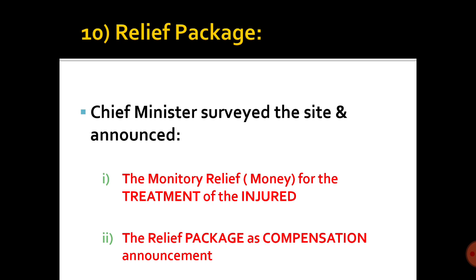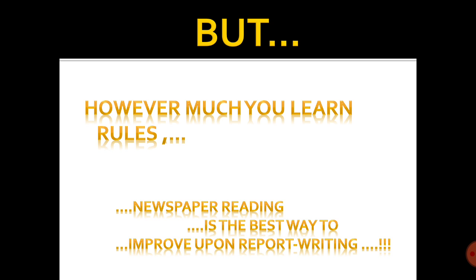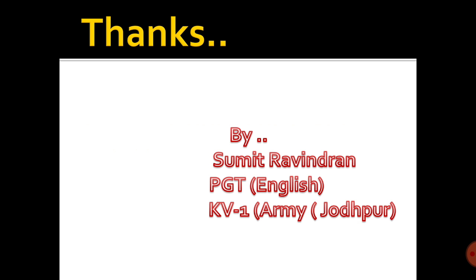A useful word to remember is 'deceased' — spelled D-E-C-E-A-S-E-D — or you could be simple. Remember to write all these 10 points. However much you learn the rules, newspaper reading is the best way to improve upon report writing. Thanks so much.